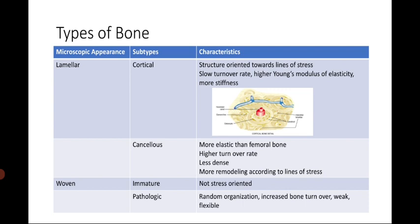The next type would be woven bone — immature bone, which is usually found in pediatric patients. Immature bone is usually not stress-oriented. It can also be found in fracture callus. When a patient has a fracture, the body attempts to heal itself and we find a fracture callus composed of woven or immature bone. The next type is pathologic bone, which has a random organization, increased bone turnover, and is usually weak and flexible.